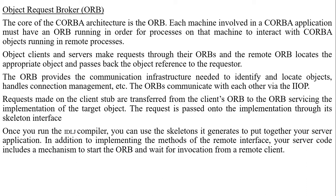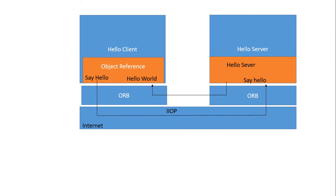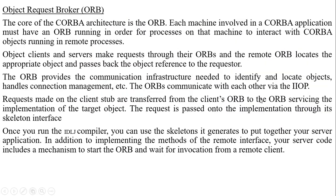Object clients and servers make requests through their ORBs. The client machine has an ORB interface and the server machine has its own ORB interface. The ORB provides the communication infrastructure needed to identify and locate objects and handle connection management.